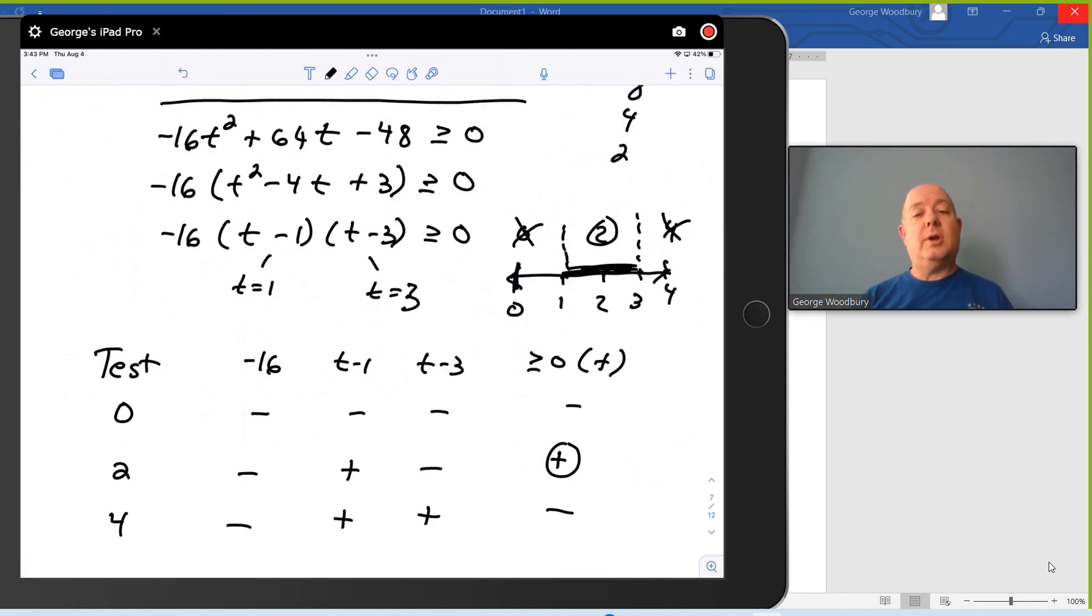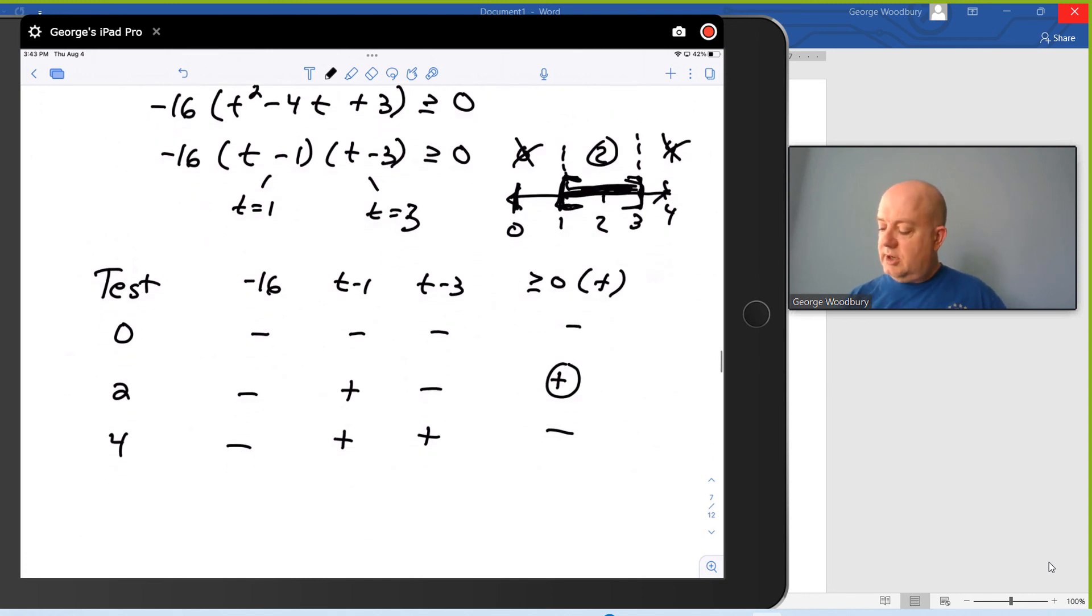Because I had the greater than or equal to sign, that means the endpoints are included. So the interval notation here would be 1 comma 3 in brackets. And in words, that's from 1 second to 3 seconds.